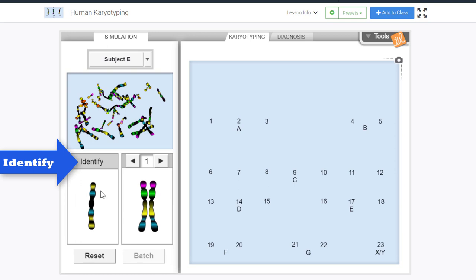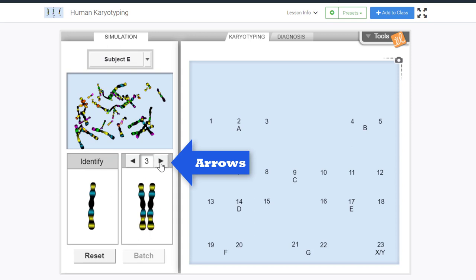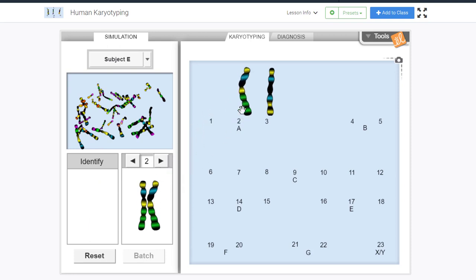Then we can click the left and right arrows to change the matching chromosomes and determine which number our chromosome is. We can then drag the identify chromosome to the number on the karyotyping tab. We will continue to drag chromosomes to the karyotyping tab until there are none left.